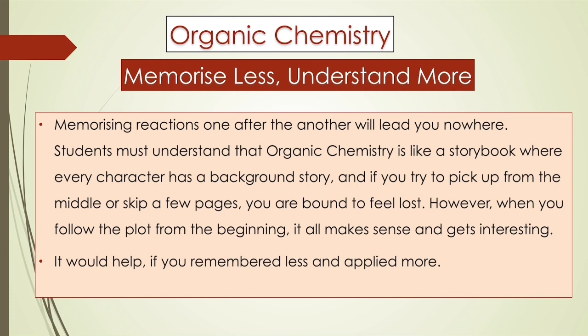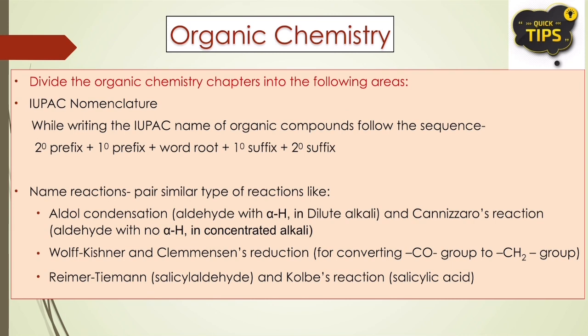Organic chemistry should be learned from the first page to the last page — just like reading a storybook. Since there are four organic chapters, I suggest dividing them into different areas. The first area is IUPAC nomenclature: select the different compounds from NCERT across all four chapters and practice naming them. While writing the IUPAC name, follow the order: secondary prefix, primary prefix, word root, primary suffix, secondary suffix. Don't jumble them up.